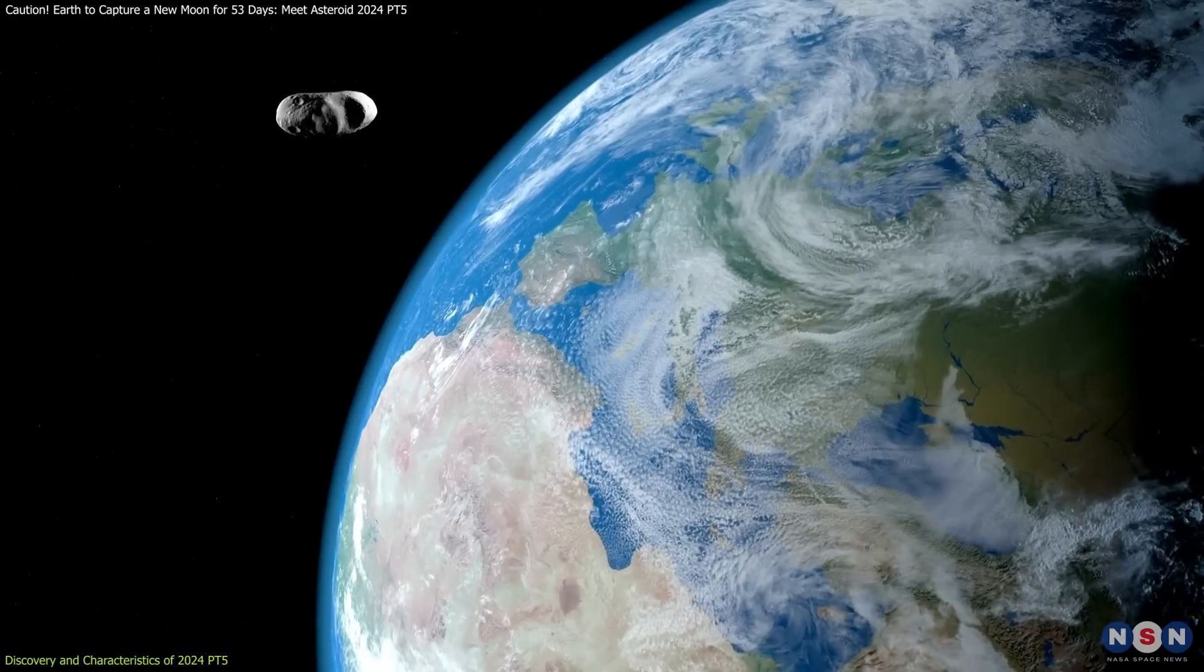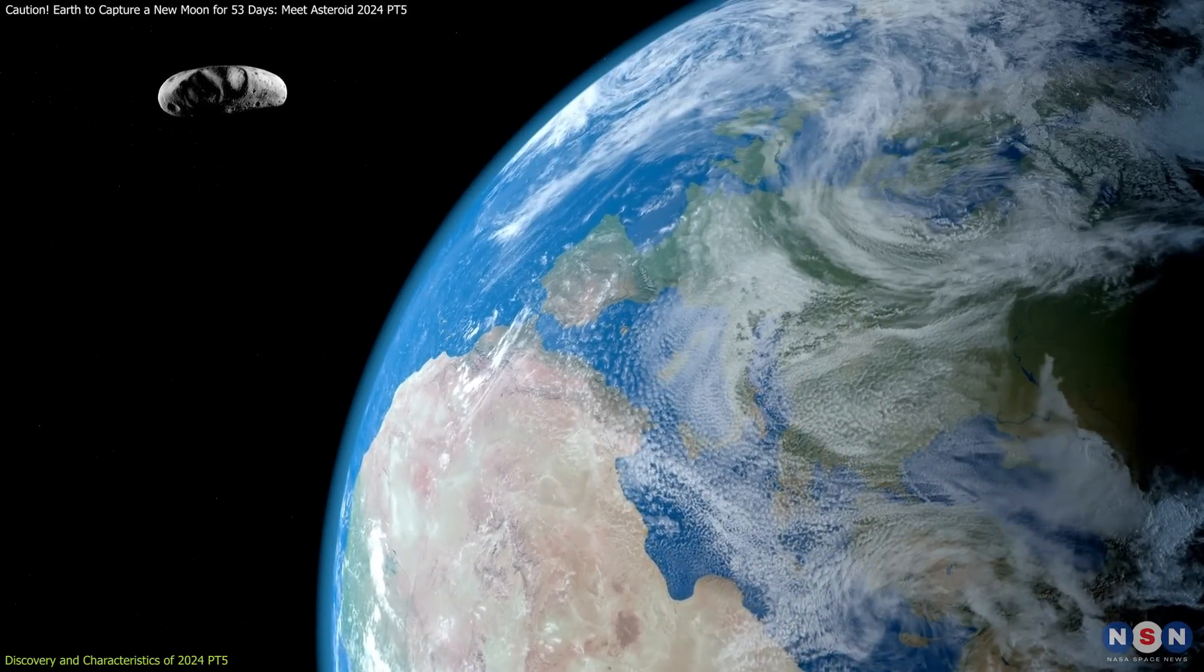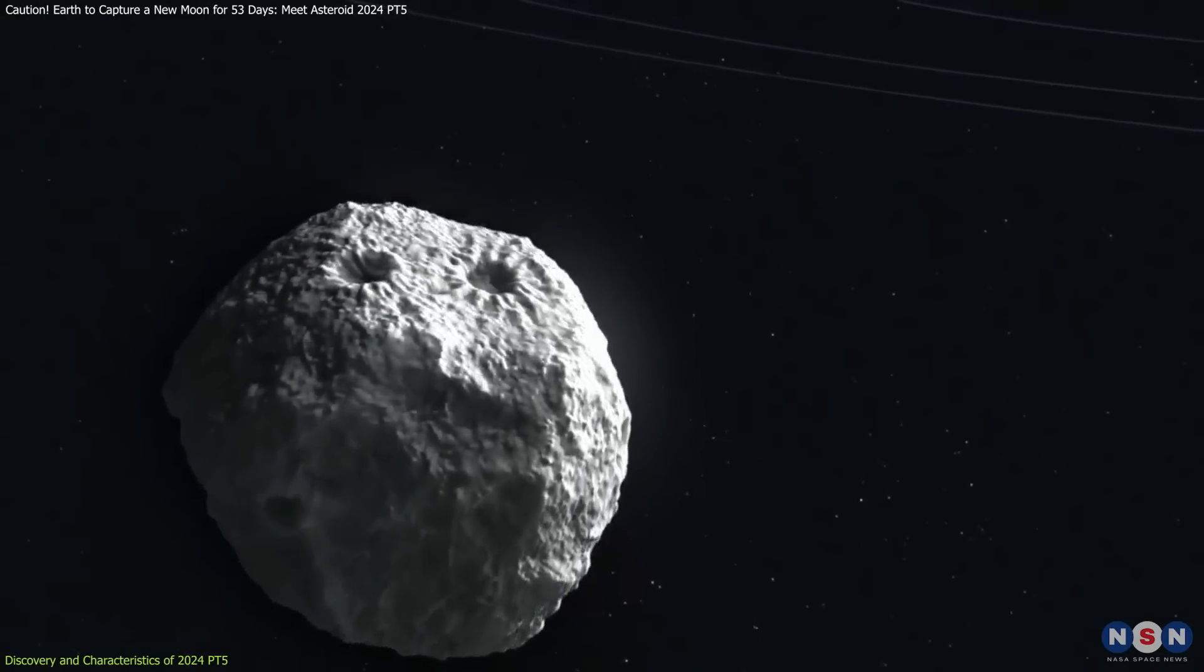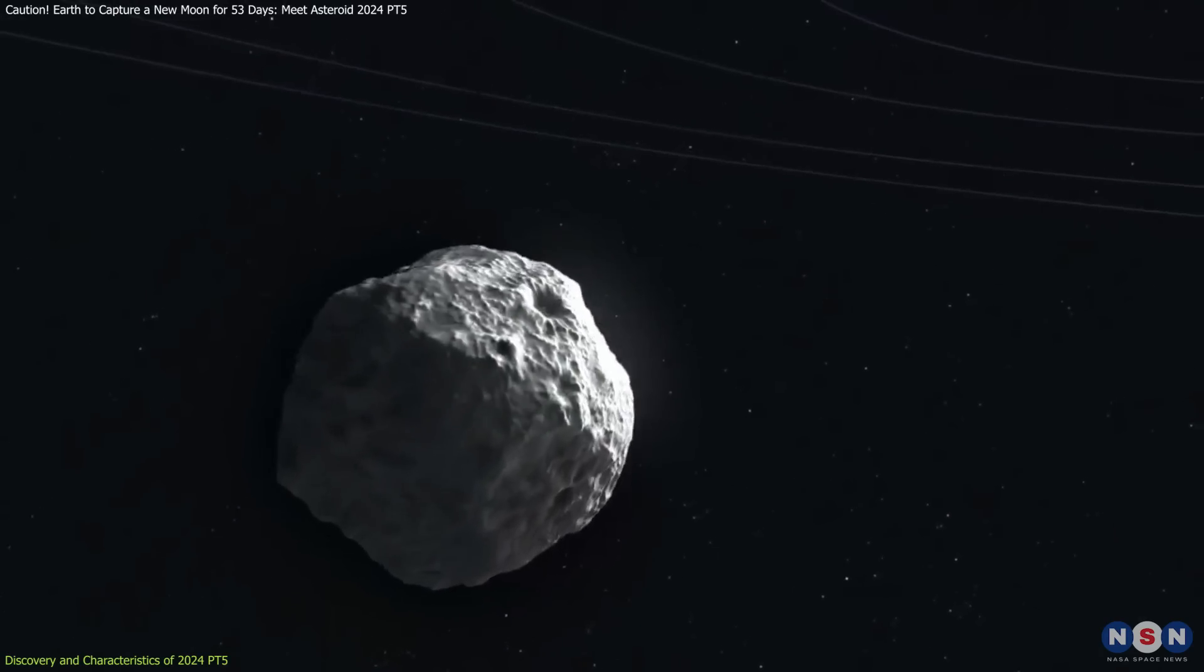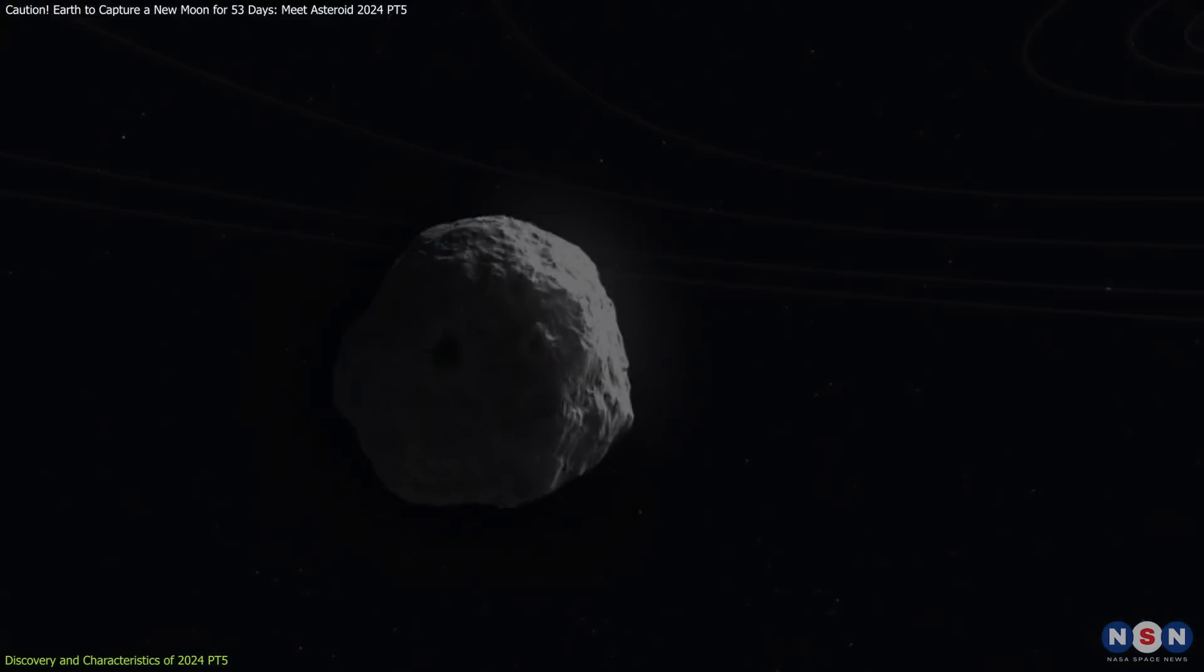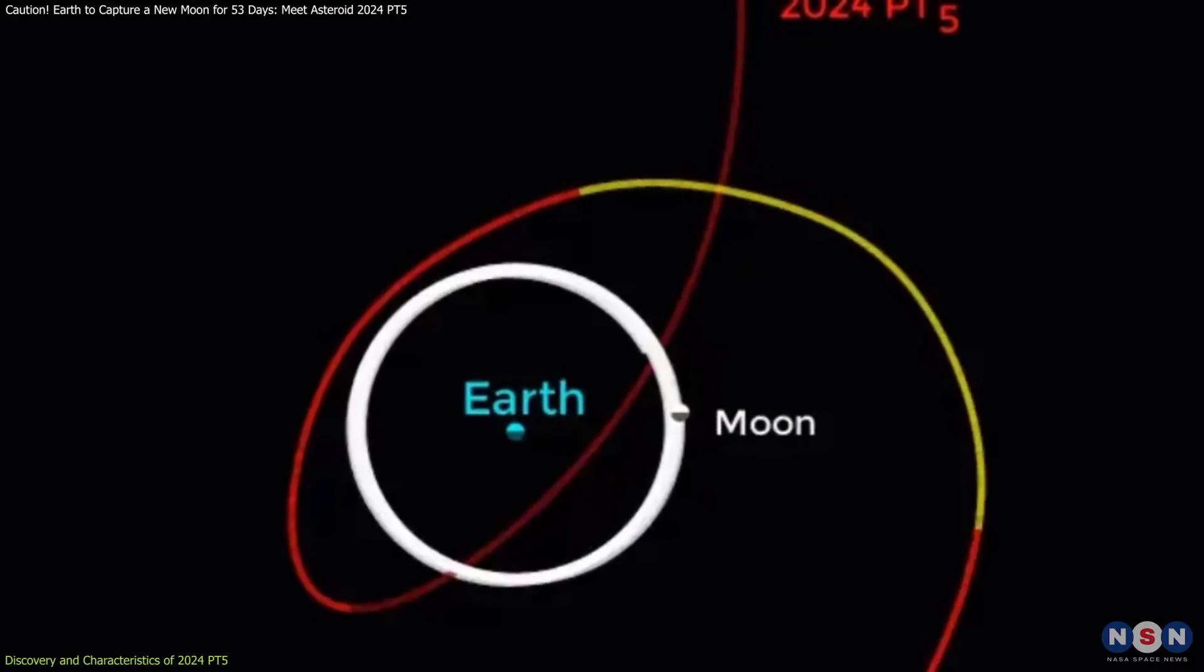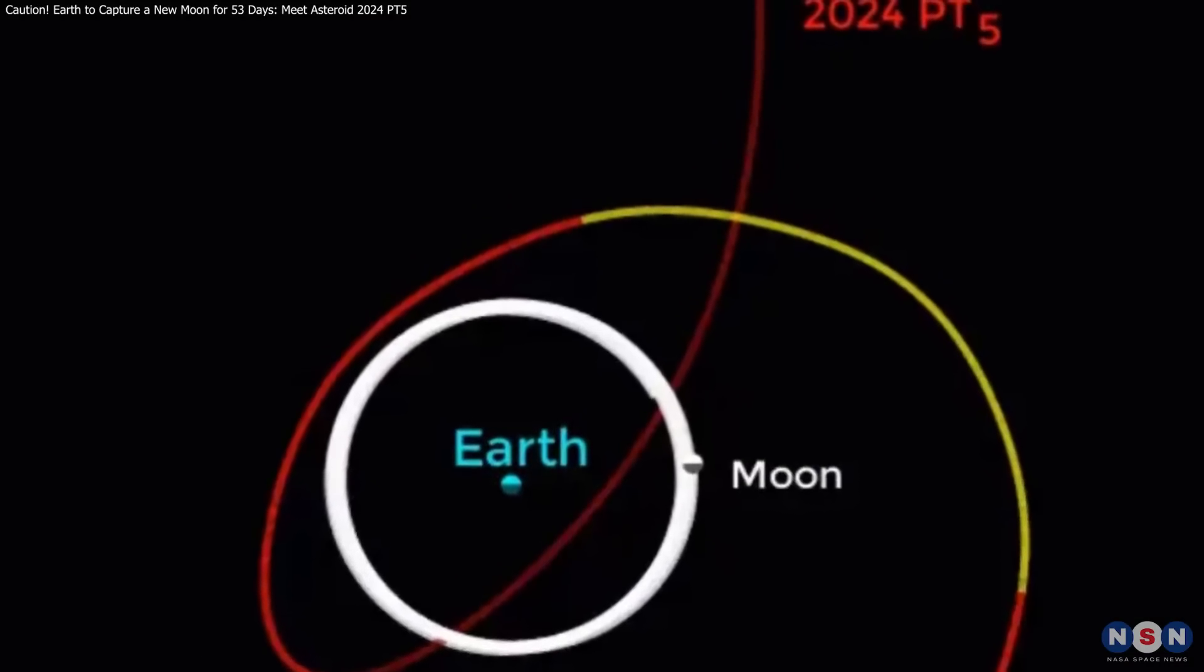Scientists have determined that 2024 PT5 is a natural object rather than space debris, which is significant because it means its trajectory is not influenced by the forces that affect artificial objects in space, such as solar radiation pressure or atmospheric drag. This natural orbit makes it a perfect candidate for a temporary mini-moon.